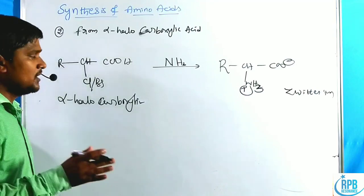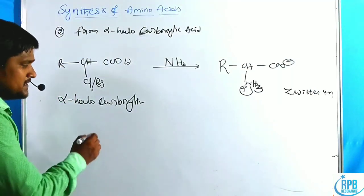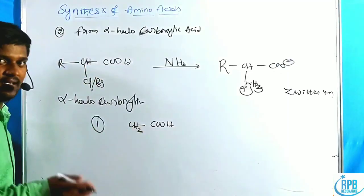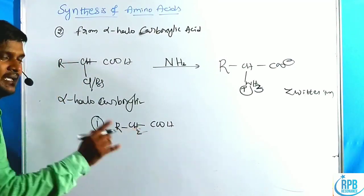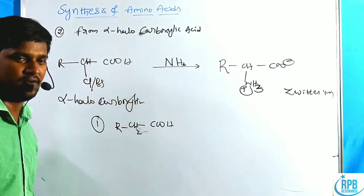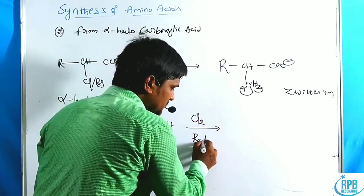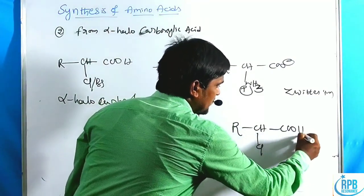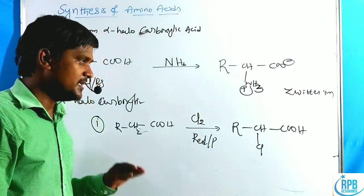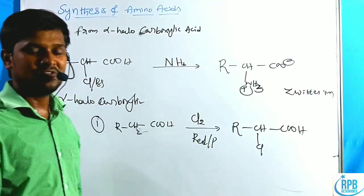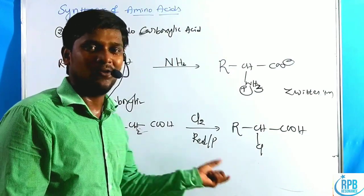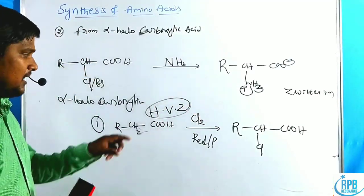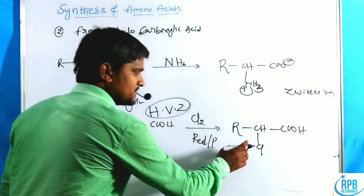This method involves two steps. Step one is preparation of the alpha halo acid. Taking acetic acid (which has at least one alpha hydrogen), in the presence of chlorine and red phosphorus medium, we get R–CH(Cl)–COOH. This process is called alpha halogenation, which is the HVZ (Hell–Volhard–Zelinsky) reaction.